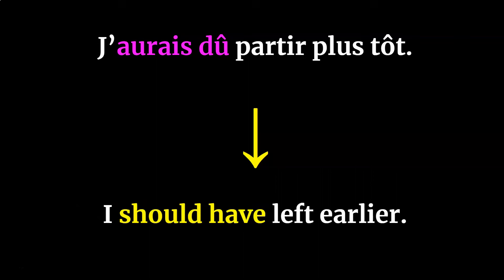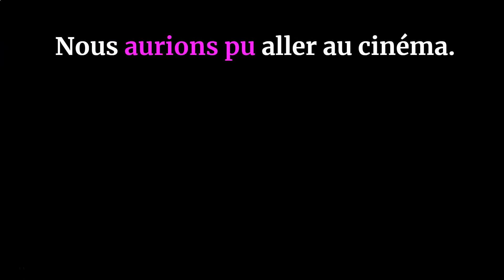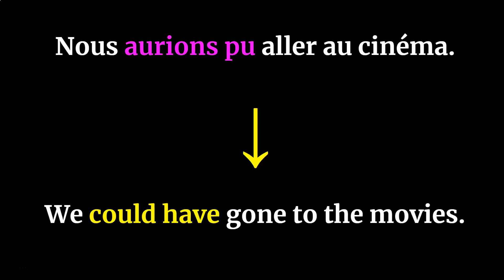After saying 'I should have' in French — j'aurais dû — the following verb, your main action verb, will be in its infinitive form. Next example: nous aurions pu aller au cinéma, which translates to 'we could have gone to the movies.' Again, after saying 'could have,' the main action verb will be in its infinitive form — in this case, aller.